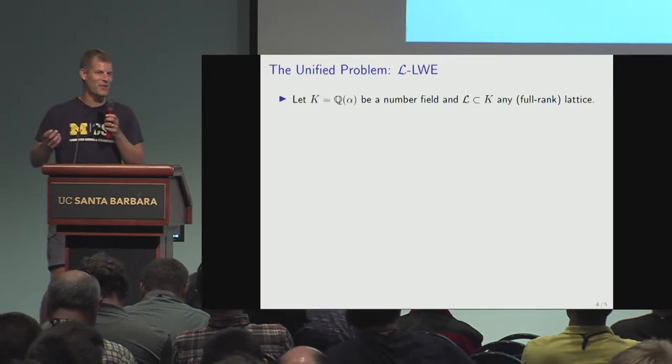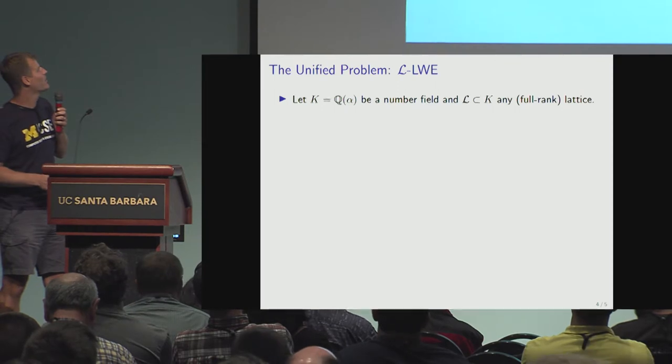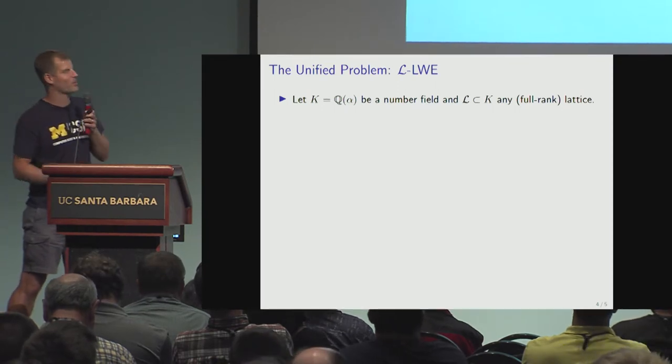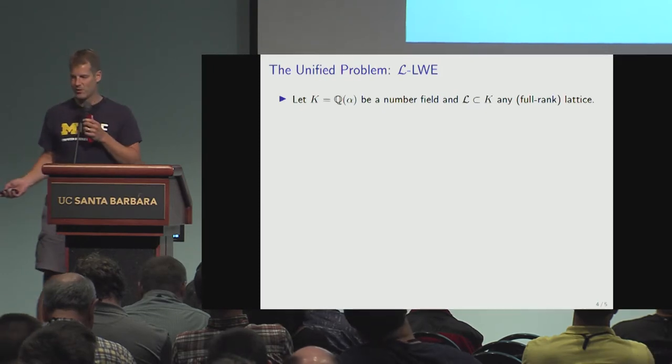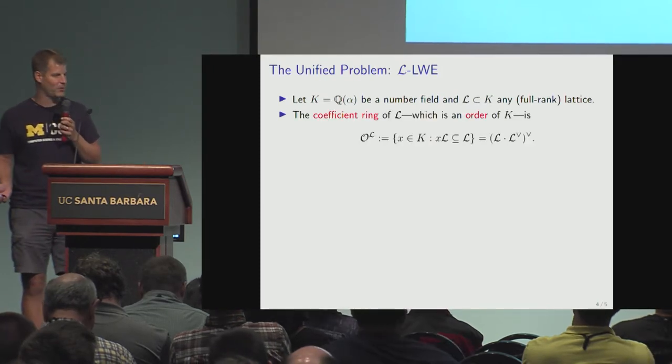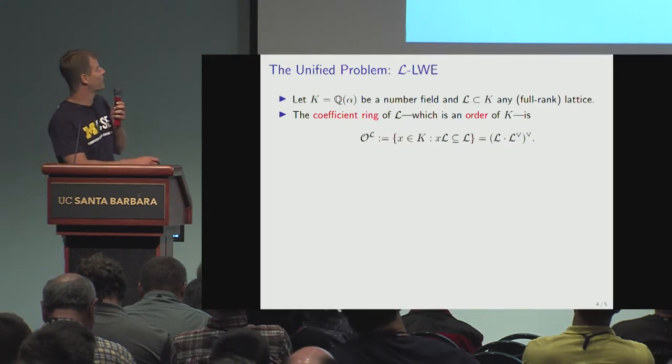I'll just define the unified problem. It's actually pretty cute and simple. Take a number field and take any full-rank lattice in the number field that you want. There's an object here which is not terribly well known, but if you dig through certain textbooks it'll show up—the coefficient ring of the lattice L.